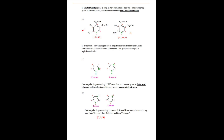If one substituent is present in the ring, the heteroatom should bear number one, and numbering is given such that the substituent bears the least possible number. If more than one substituent is present, the heteroatom still bears number one, and the substituents should bear the least set of numbers, with groups arranged in alphabetical order.